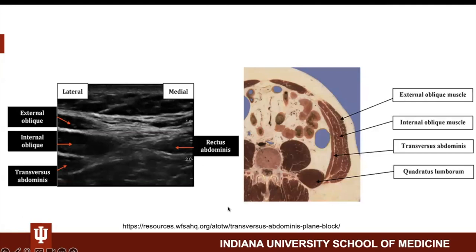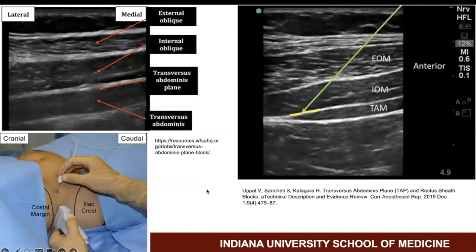Start by placing the ultrasound probe in the mid-axillary line between the iliac crest and costal margin. The three muscle layers should come into view and look something like this. As you advance laterally, the three muscle layers will be seen running parallel to each other.